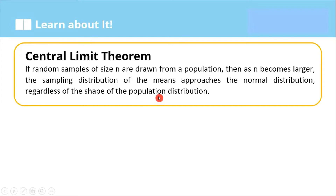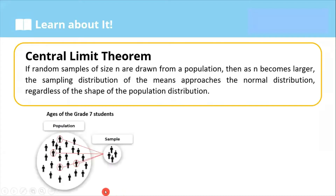I know you are trying to wrap your head around this since the definition is quite hard to comprehend, but let me ease this out for you in layman terms. For example, you want to know the ages of the grade 7 students in a given population, and since you cannot interview all students in that area, then you get a sample. From that sample, you get the average or the mean age of these students. This average age is called our sample mean.